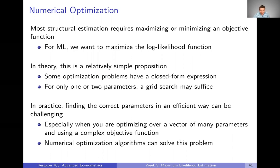But in practice, finding those correct parameters, the maximum likelihood estimators in this case, in an efficient way can be challenging. And this is especially true when you're optimizing over a vector of many parameters and using a complex objective function. We'll see examples of this next week when we start applying maximum likelihood to the logit model. And in this case, numerical optimization algorithms can solve this problem for us.